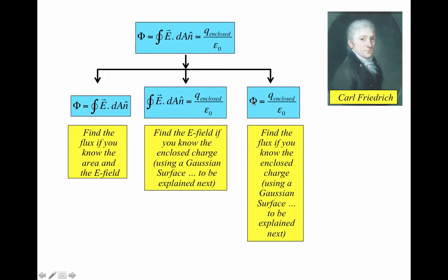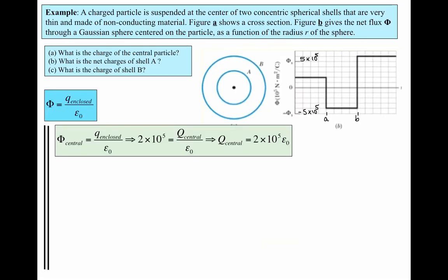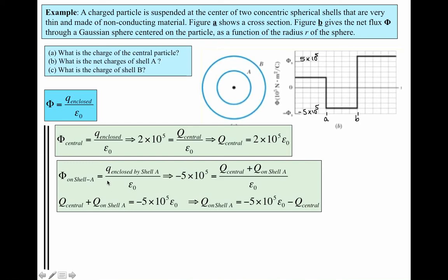We use the equation Φ = Q_enclosed/ε₀ since we know Φ and want Q_enclosed. For part (a), building a Gaussian surface between 0 and a, the flux is constant at 2×10⁵. So: 2×10⁵ = Q_central/ε₀. From this we can get Q_central directly.